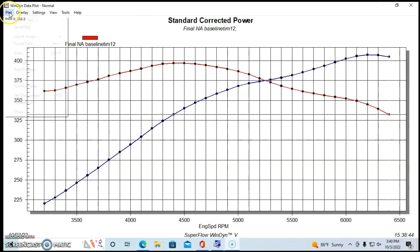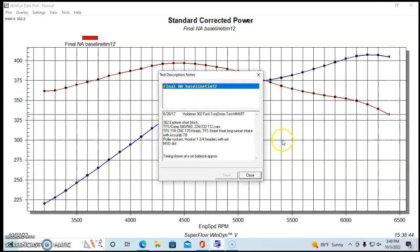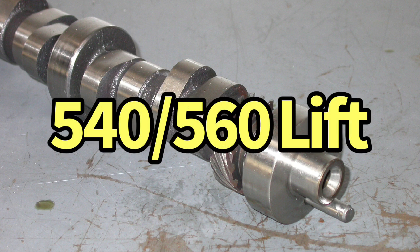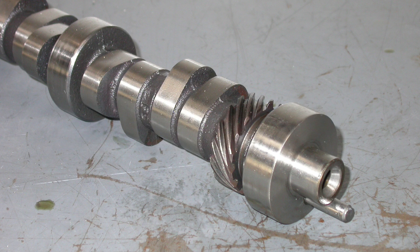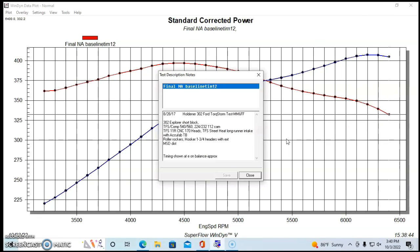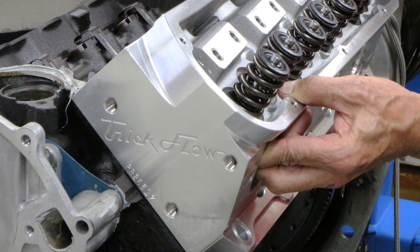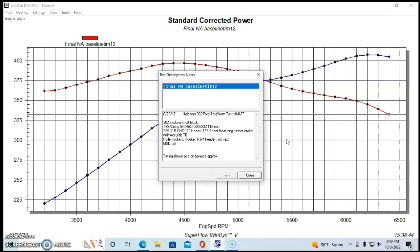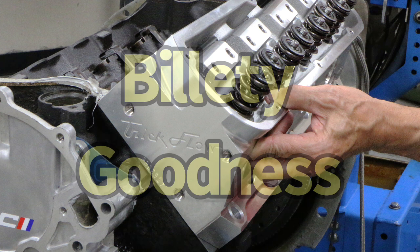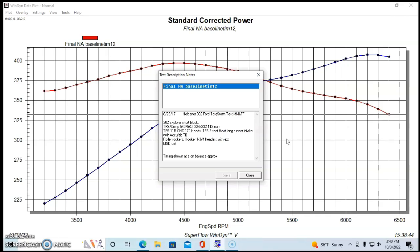So let's take a look at our test description here. We installed on our Explorer short block a Trick Flow camshaft, which was 540, 560 lift, 224, 232 degree duration split at 112 degree lobe separation angle. We also replaced the GT40 heads with a set of TFS 11R CNC ported heads. These were 170s. Those heads work very well. They've got a small chamber. They flow a lot. They've got small ports. I like the way that they look externally. They look like a billet head. They're kind of awesome looking. So externally, they've got a good eyeball as well as working very well.